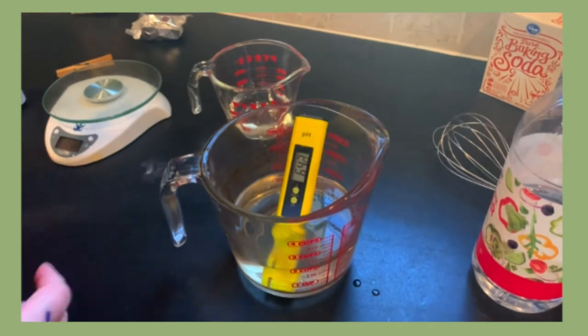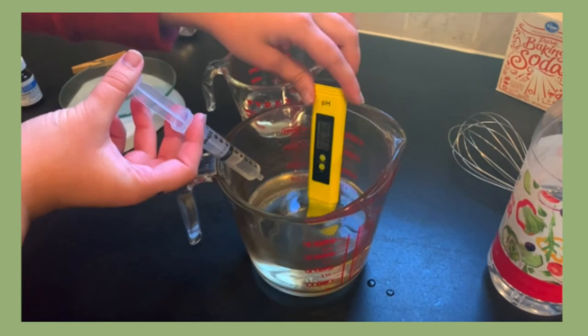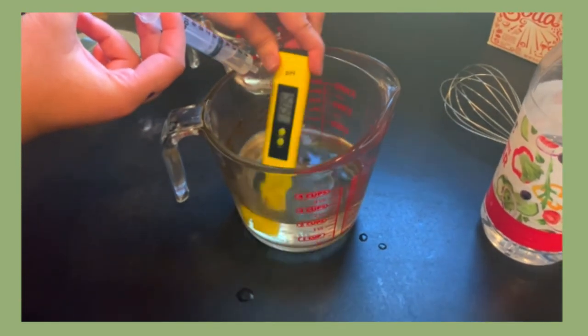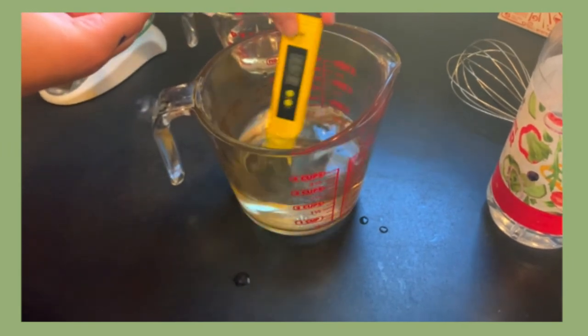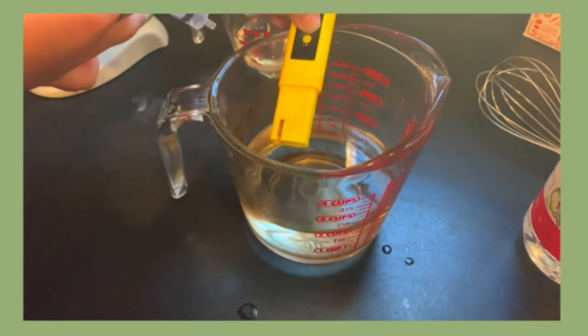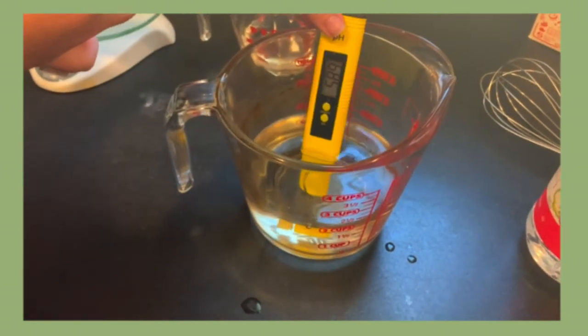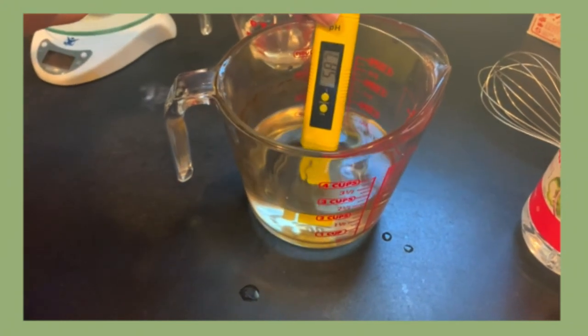Using the digital pH meter, adjust the pH until 5.8 is reached. If the pH is too high, add vinegar with a syringe a few drops at a time as is seen here. If the pH is too low, add baking soda a small pinch at a time. Continue to mix the solution as the pH is adjusted to make sure the vinegar or baking soda is fully incorporated.